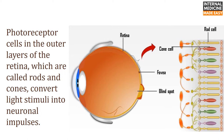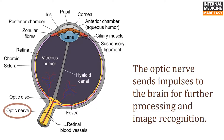Photoreceptor cells in the outer layers of the retina, which are called rods and cones, convert light stimuli into neuronal impulses. The optic nerve sends impulses to the brain for further processing and image recognition.